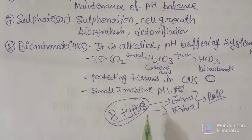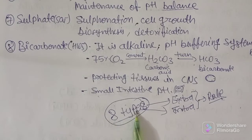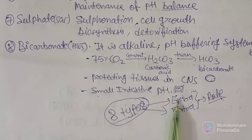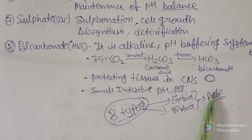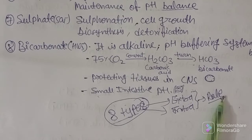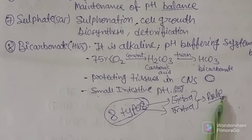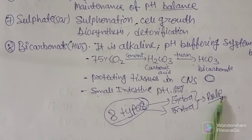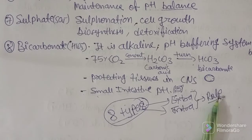We have discussed eight types of electrolytes — extracellular and intracellular — each having important physiological roles. The most common roles include pH balance, balancing of body fluid, balancing electrolytes, and strengthening muscles, nerves, bones, and teeth. These are the important physiological roles of intra- and extracellular electrolytes. Thank you.